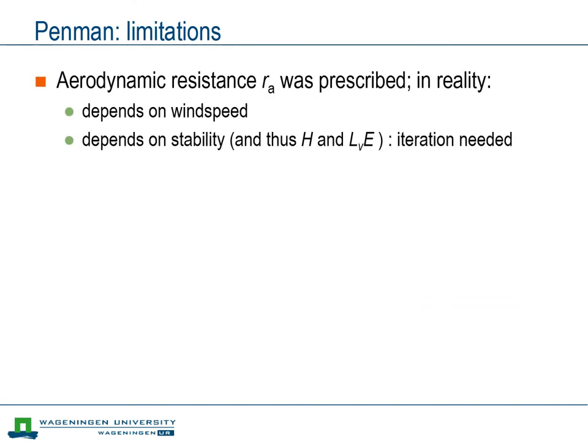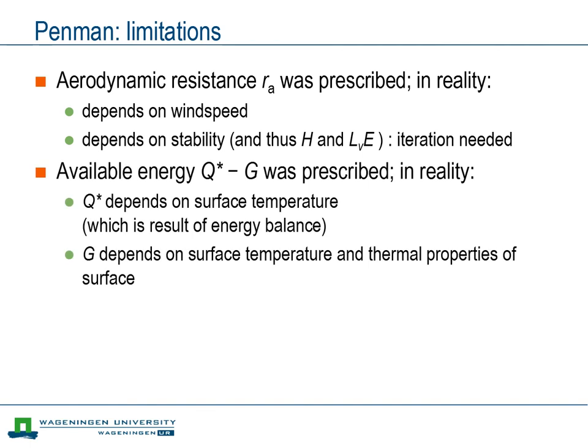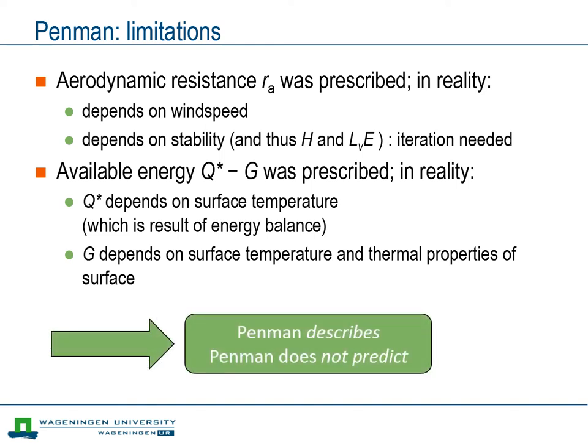Now it is time for some final notes on the limitations of the Penman equation. First, we prescribed the aerodynamic resistance to keep the derivation simple, but in reality the aerodynamic resistance depends in part on the outcome of the same computation: the magnitude of the resulting buoyancy flux will determine stability, and through that the aerodynamic resistance. Likewise, we prescribe the available energy. However, both net radiation and soil heat flux depend on the surface temperature, which would be the outcome of that same computation of the surface energy balance. So the Penman equation is a proper way to describe the latent heat flux from a wet surface, but it has its limitations when it comes to predicting that latent heat flux.